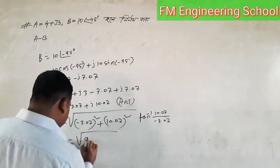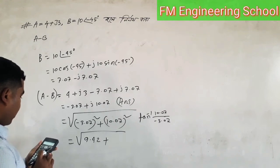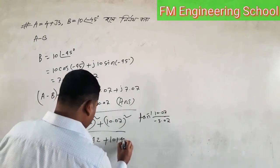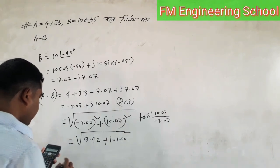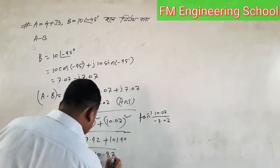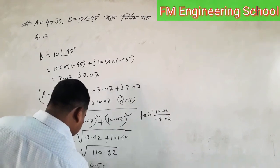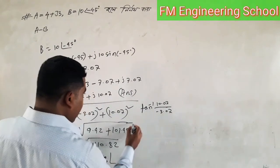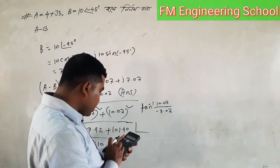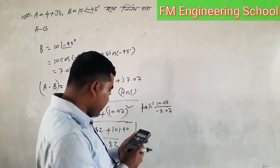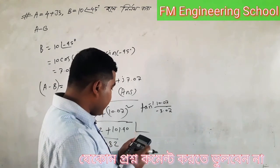The result is 1.4, then 9.42, then 10.82, then 10.52, and finally 10.07. We need to take tan inverse to find the angle.